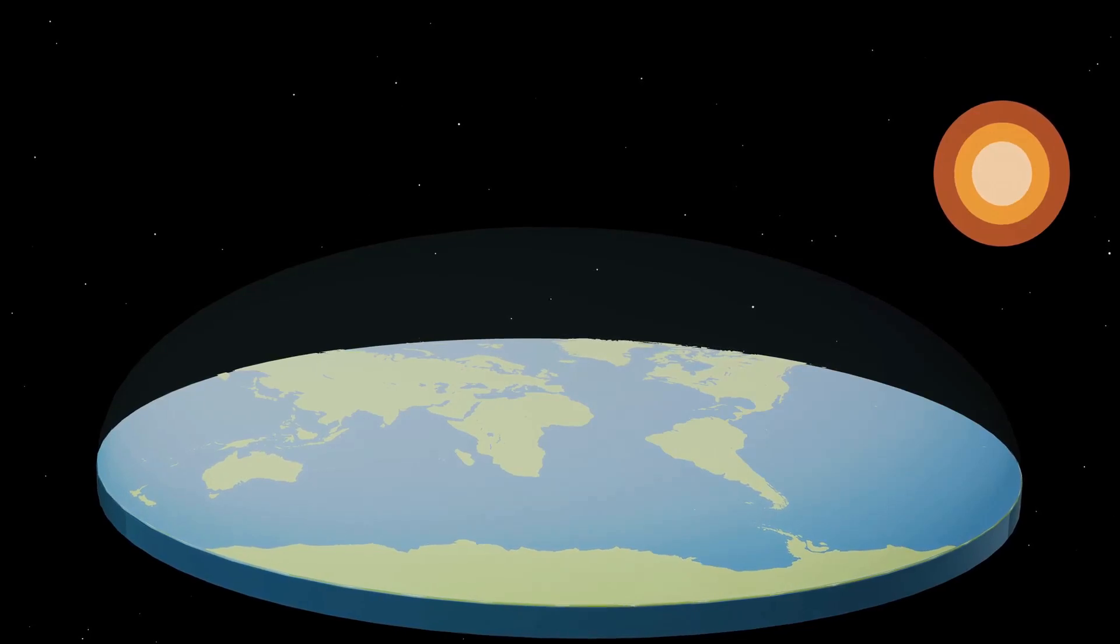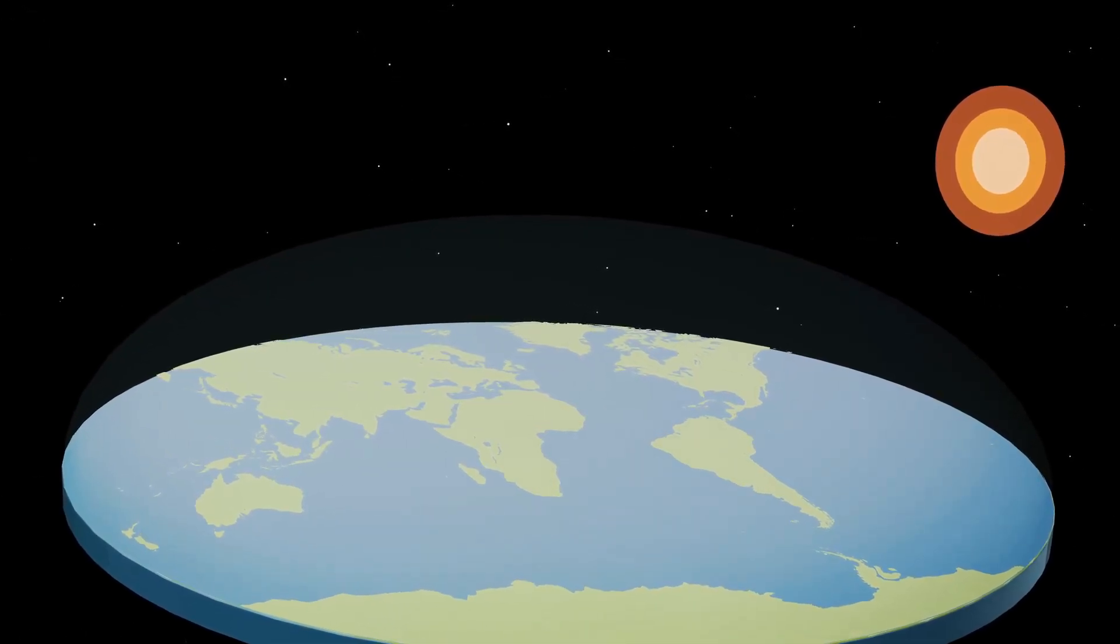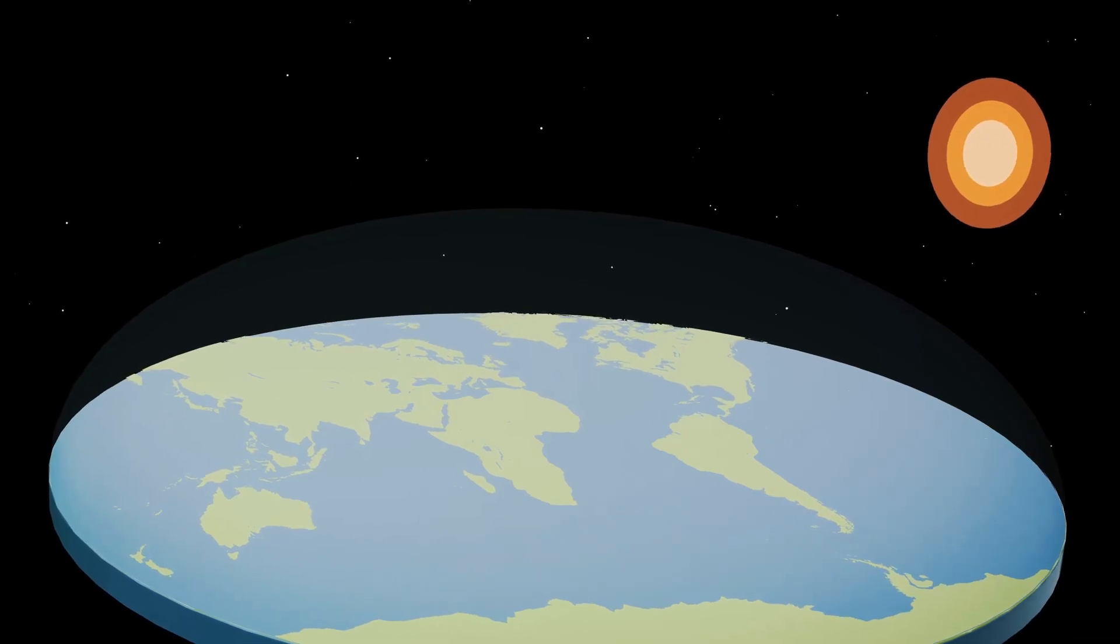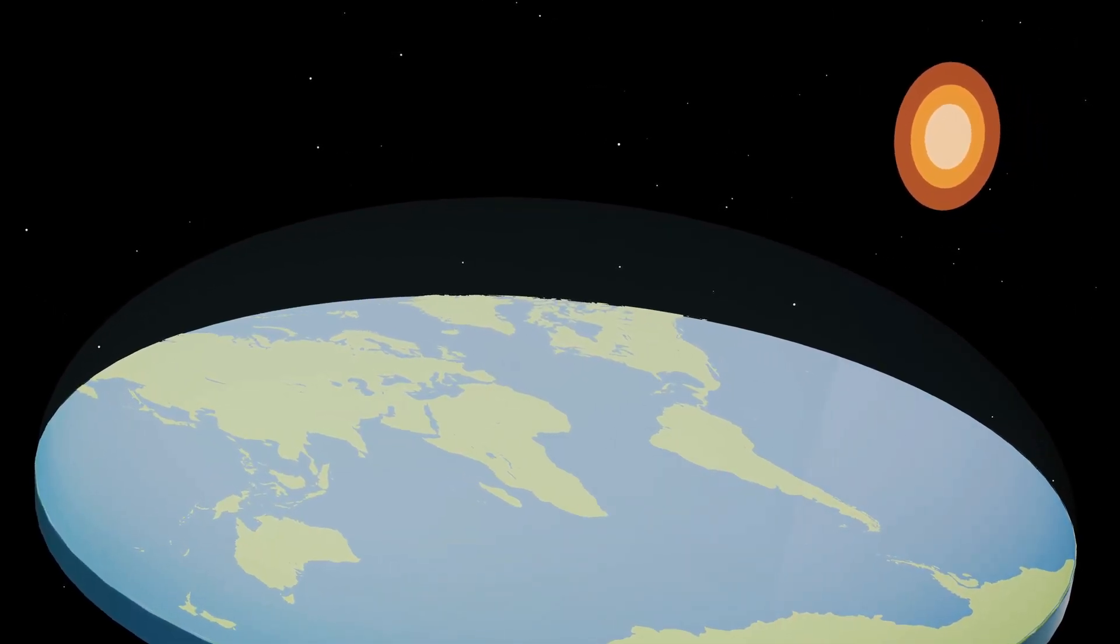For instance, ancient Babylonian mythology depicted the Earth as a flat disk floating in the ocean, while early Egyptian cosmology envisioned the world as a flat plain stretching under a giant celestial dome.